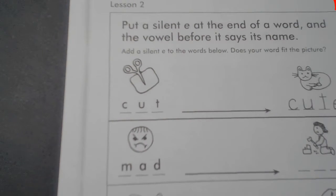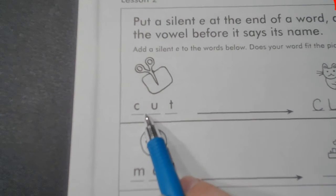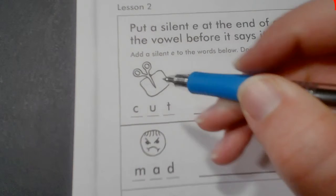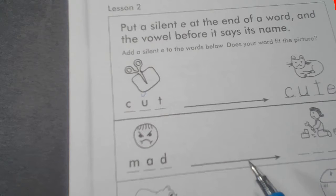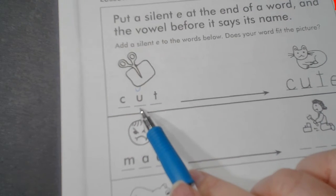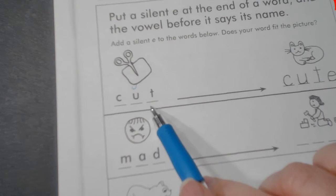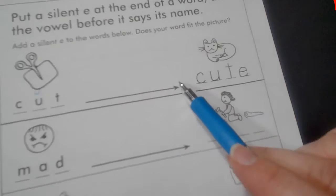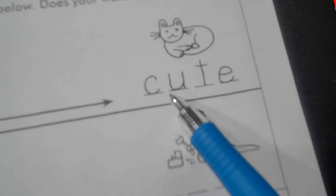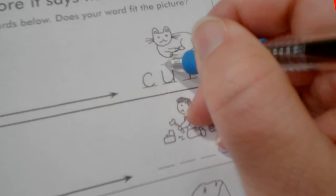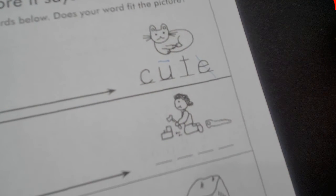Our first step is to read the word. There is no E, so this is short, like up, cut. But now if we add an E to the end it is cute. Let me slash that E, cute.